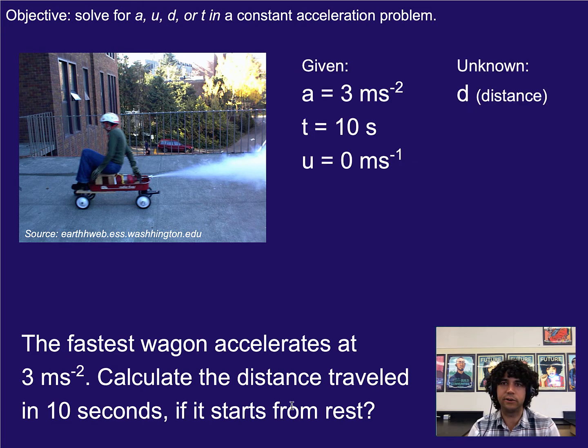So first things first, let's go ahead and write down our given info. Please remember that as you write down given info, we need to show the variable, the value and the units for each thing. The reason why we show the variable is because that will help us identify which equation we think we need to use or multiple equations we need to use to solve the problem. So here the acceleration was 3 meters per second squared. We have a time of t equals 10 seconds and we know that it starts from rest so that means u or initial velocity is zero.